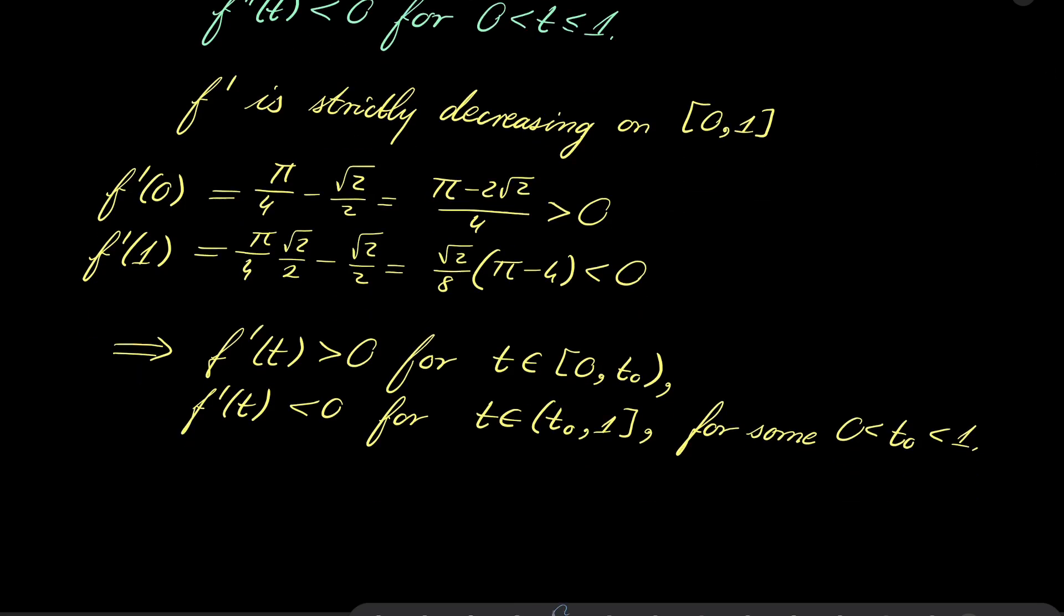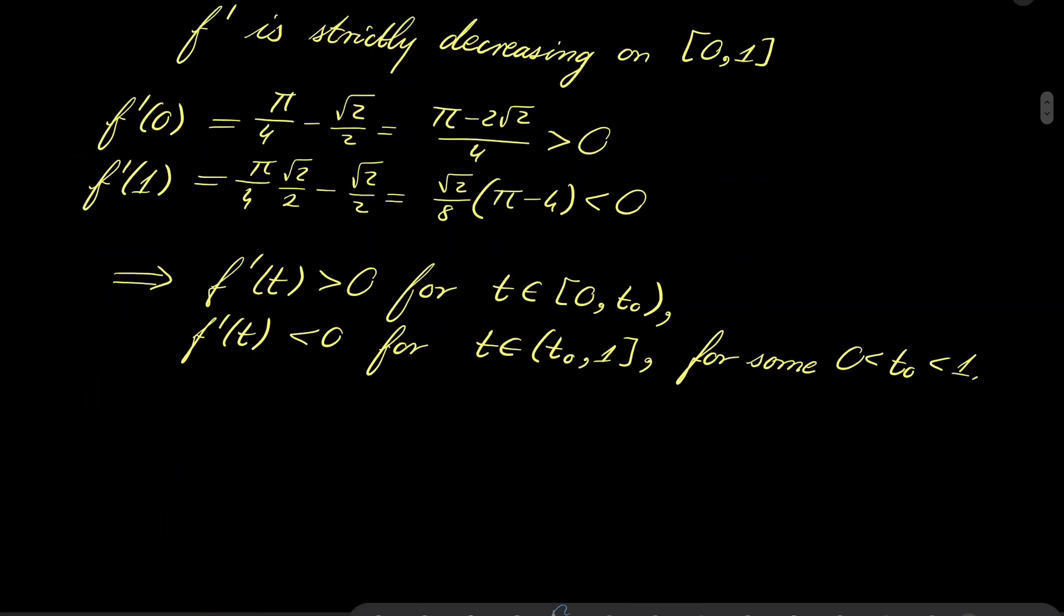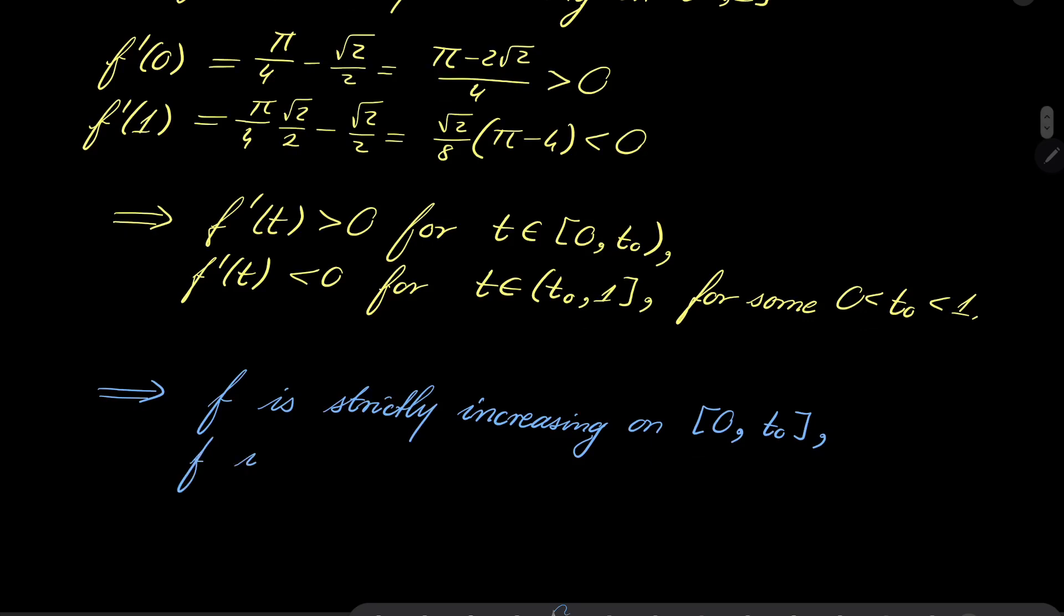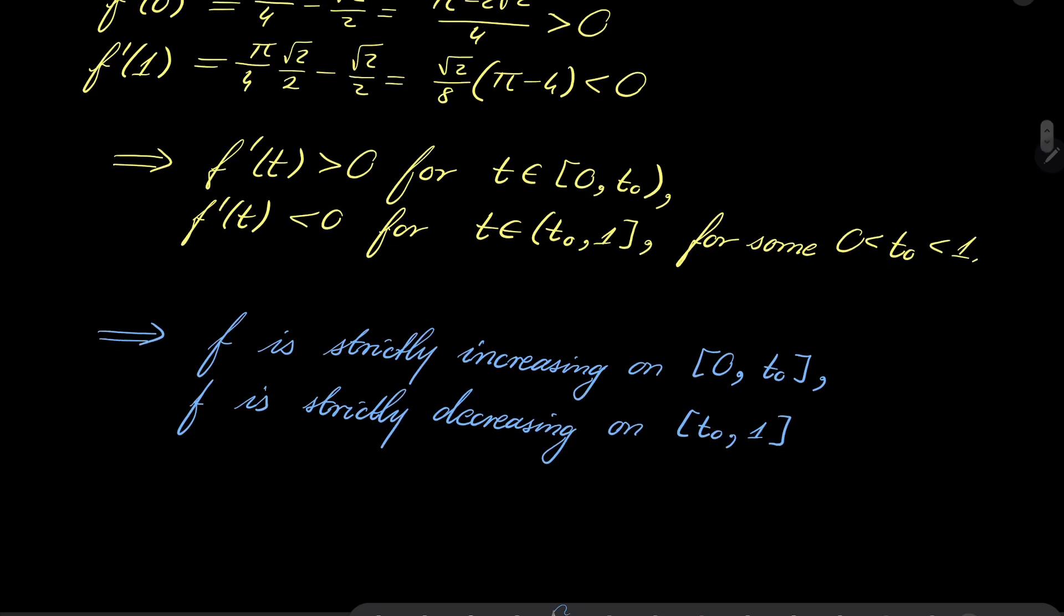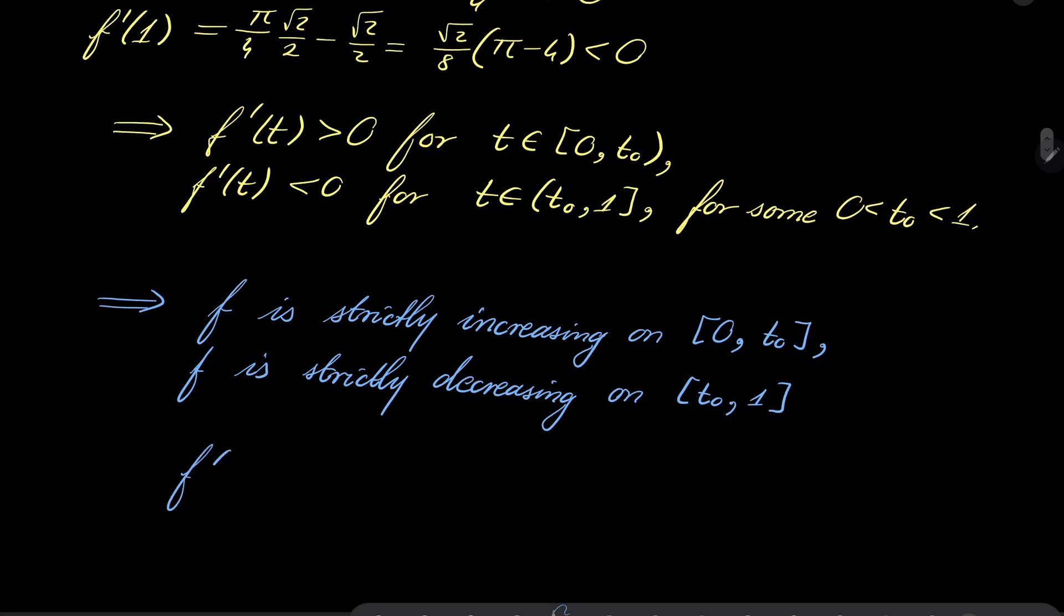Alright, but this implies something about our original function f. Namely, this implies that f is strictly increasing on the interval [0, t₀] and strictly decreasing on the interval [t₀, 1]. So the minimum can be attained either at 0 or at 1.